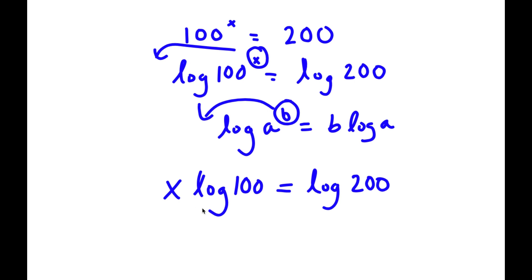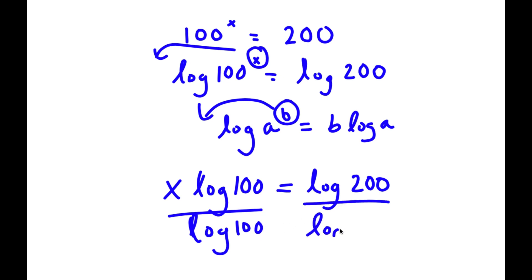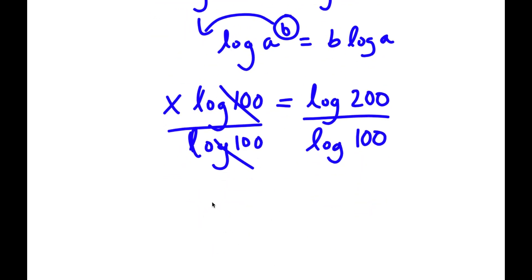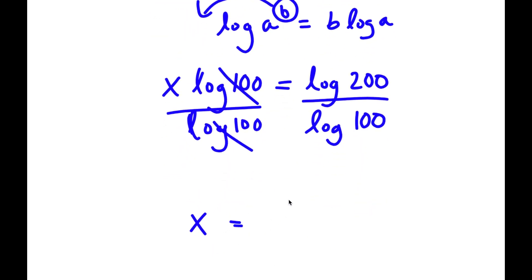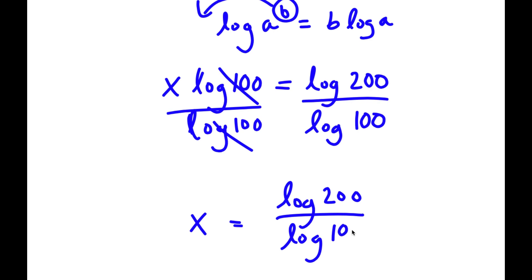Now, if I divide both sides by log 100, these two cancel out and I have x is equal to log 200 over log 100.